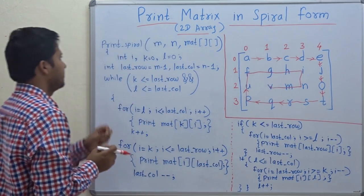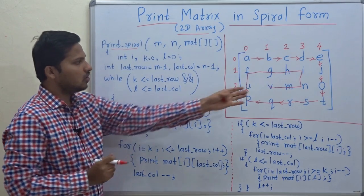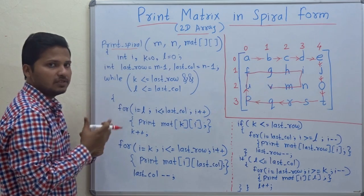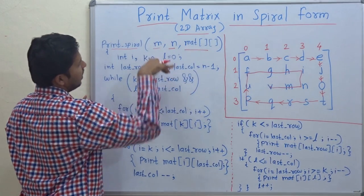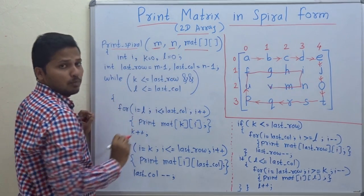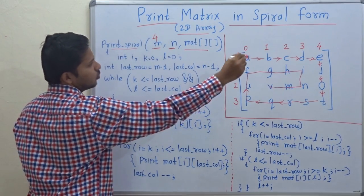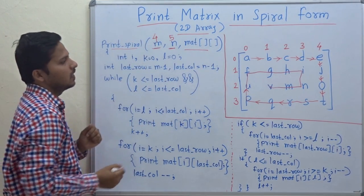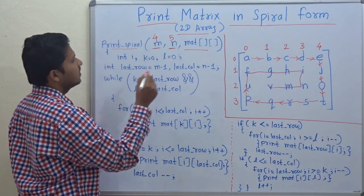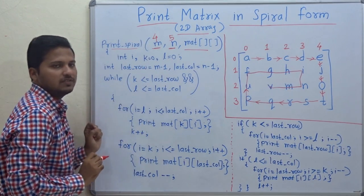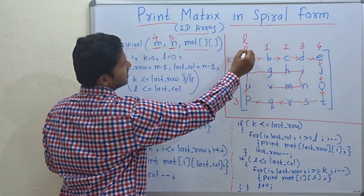So now let's write code for it. This is the function called print spiral and we will execute this function on this matrix. M, N and matrix are passed to this function. M is the total number of rows, N is the total number of columns — here total number of rows are 4 and total number of columns are 5. Integer I is declared to trace the matrix. K equal to 0 and L equal to 0, both initialized to 0.